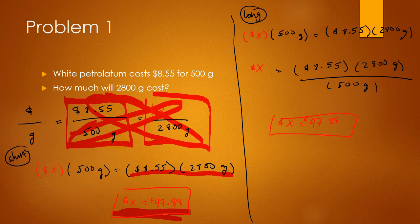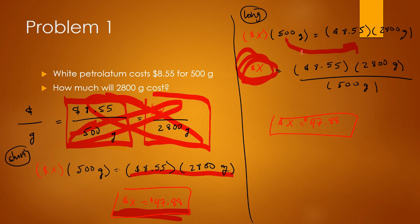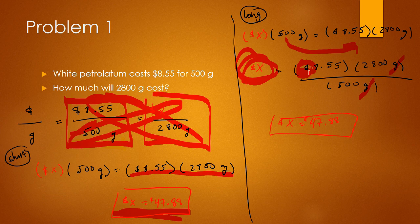So looking at the long side of it, if you forget how to do cross multiplication or actual multiplication, you want to isolate the x on one side. So here I showed the other steps that you need to get to the answer. So taking x to the other side, you want to divide it. So $8.55 multiplied by 2,800 grams divided by 500 grams. As you can see, the units down here cancel out. So then you're left with a dollar sign. And your answer is still going to be $47.88.